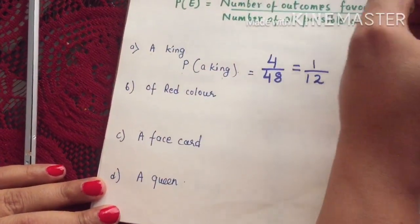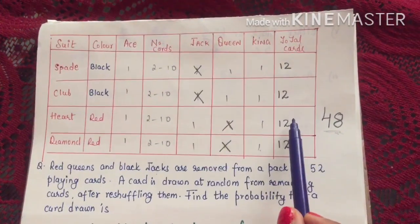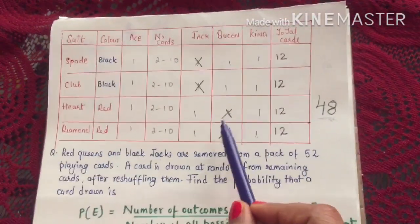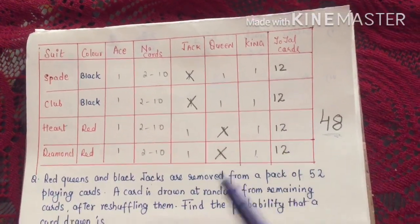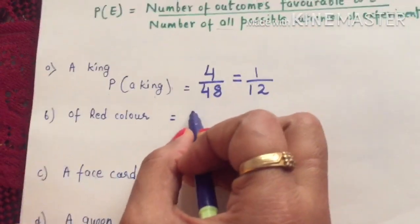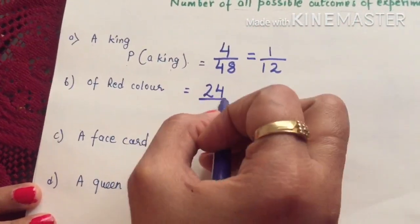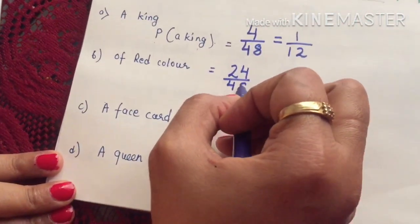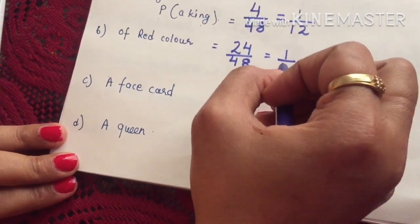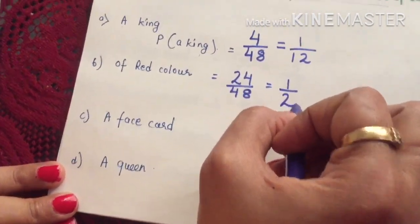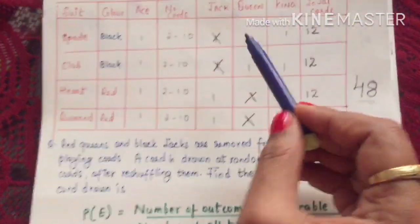Probability of getting a red color card: originally there were 13 hearts and 13 diamonds (26 red cards), but we removed one red queen from each, leaving 12 + 12 = 24 red cards. So probability of red card = 24/48, which reduces to 1/2.